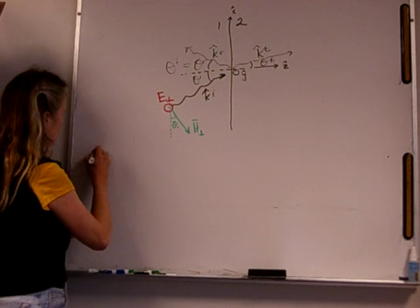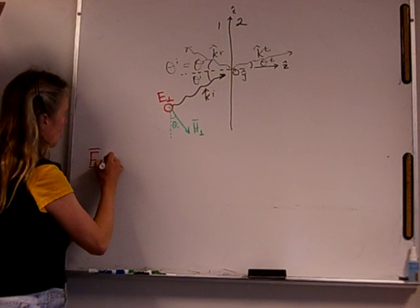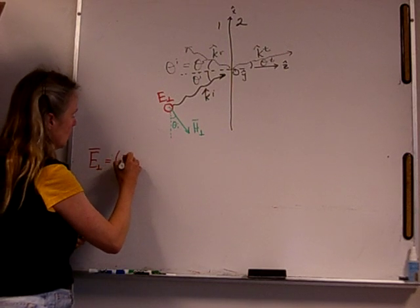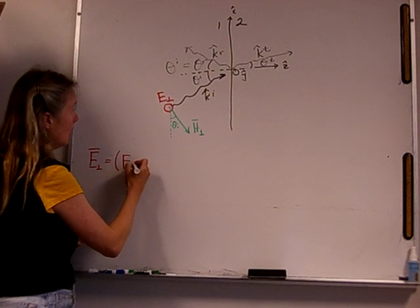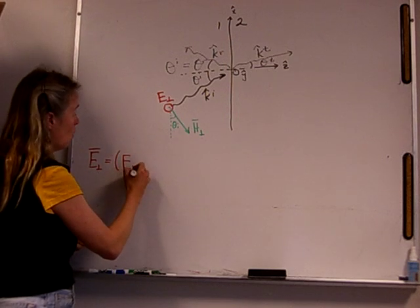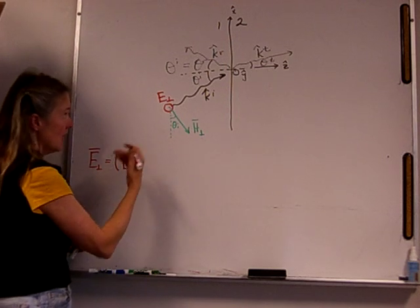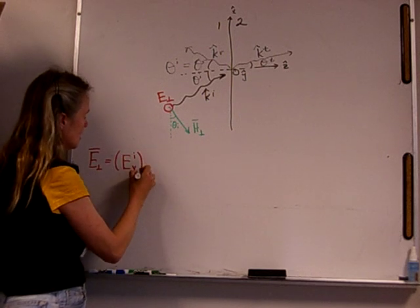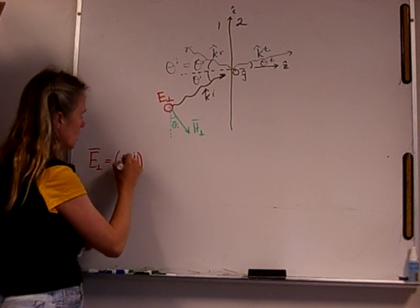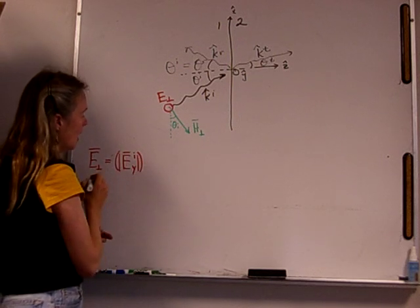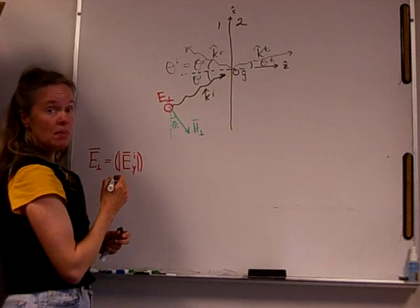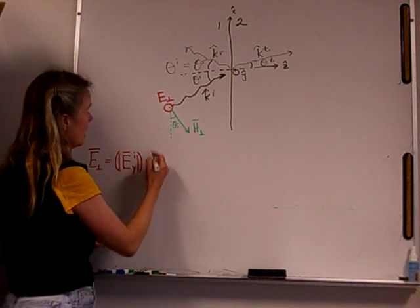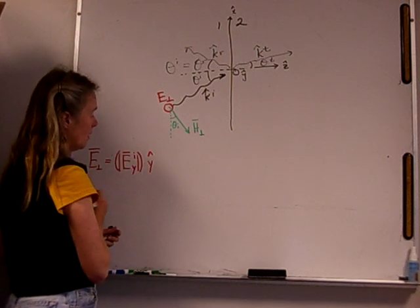The electric field for the perpendicularly polarized case is going to have some magnitude E, and in this case we can see that it's in the Y direction, because it's coming out like the Y direction — EY incident, and that's strictly a magnitude. It's then multiplied by the polarization, which in this case is Y polarized.